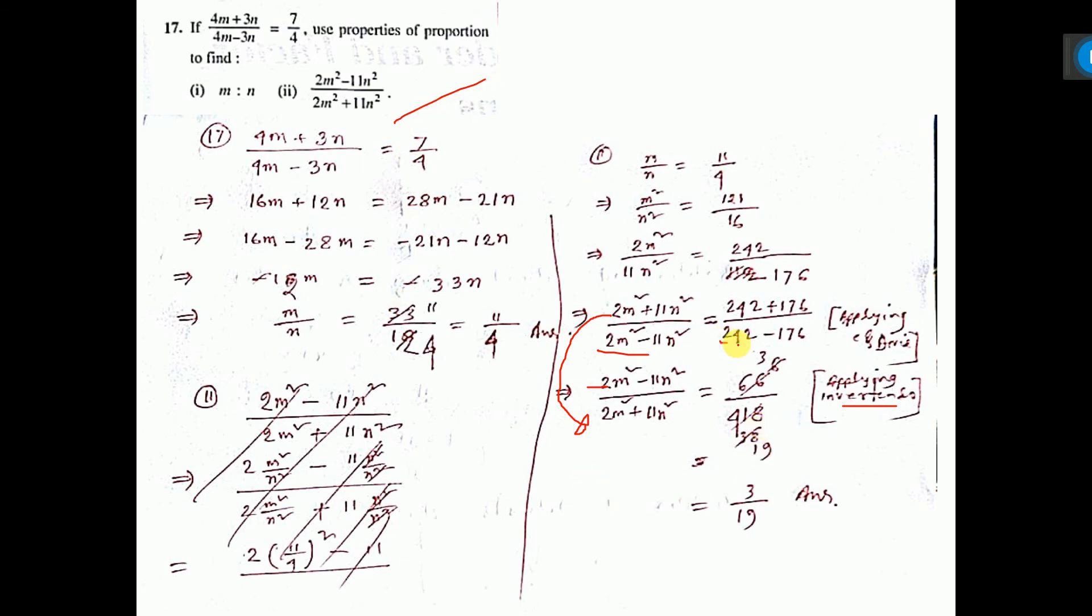So here also, this one I have to write in the numerator. Subtract this, we will get the result. And add this one, we will get this result. I am writing it at the bottom because I have applied invertendo property. Lower one will be up, upper one will be lower. That is the answer after cancellation.